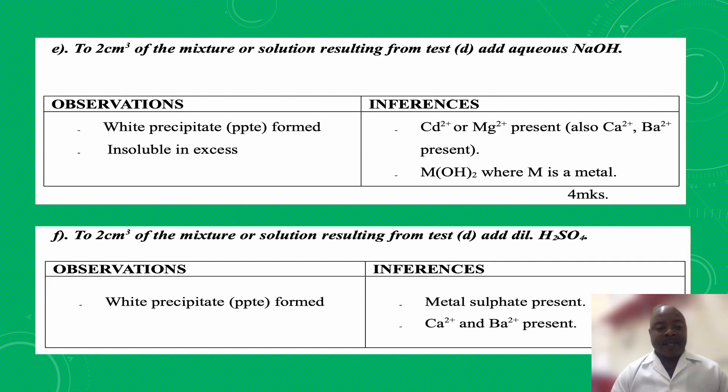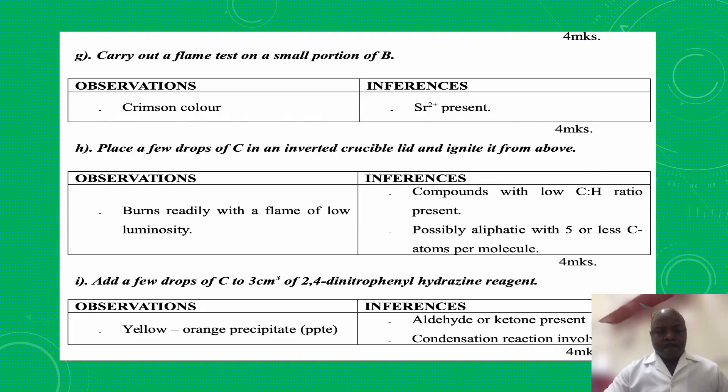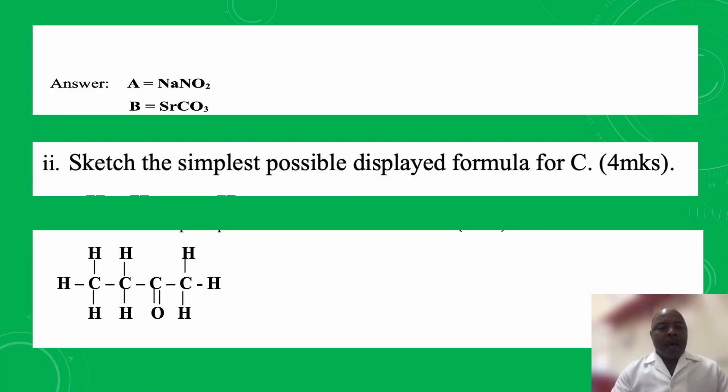The F section reads: to 2 cm3 of the mixture or solution resulting from test D add dilute sulfuric acid. On doing this, I observed that there were also white precipitates that were formed. On the inference column, the metal sulfate is also present, and the possible cations there are calcium ion and barium ion are present. So the identity for A is sodium nitrite, and the identity for B is strontium carbonate, a carbonate of group 2 element.